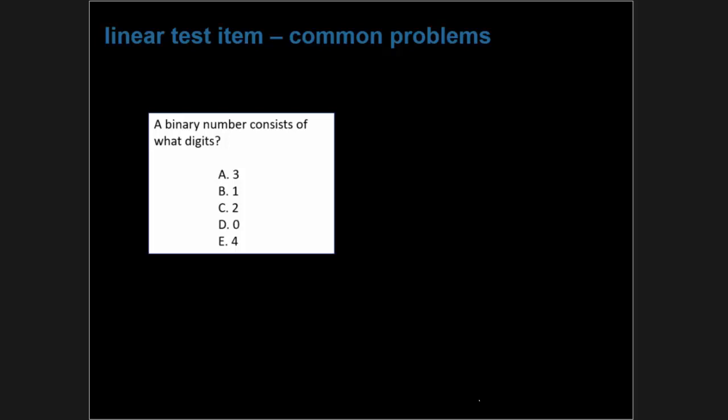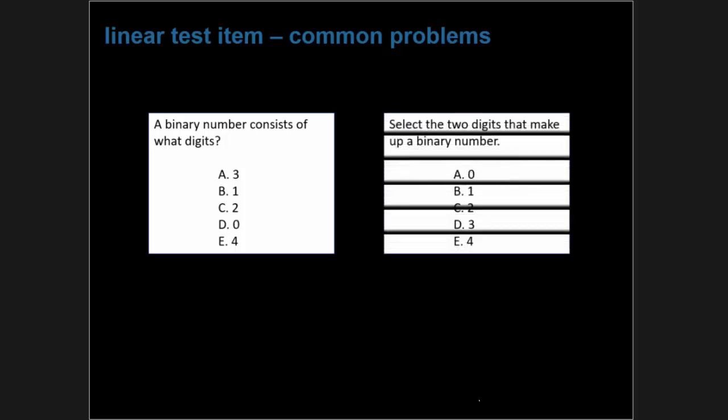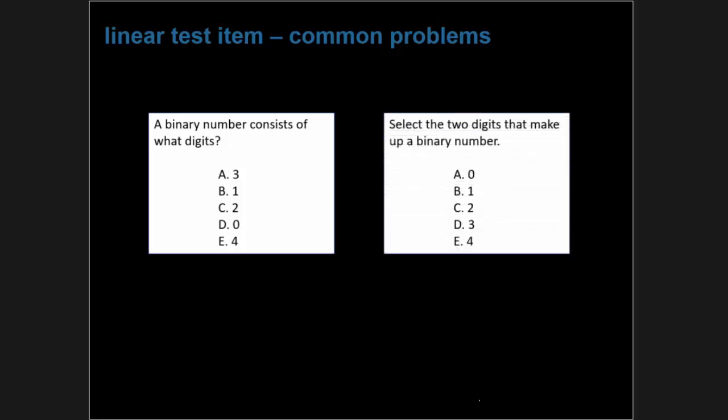Here's a test question that needs some work. 'A binary number consists of what digits?' with answers arranged randomly. We can revise it by specifying in the stem: 'Select the two digits that make up a binary number,' so students know in this multiple response item they need to pick two answers. We've also rearranged the answers so all responses are in logical numerical order.